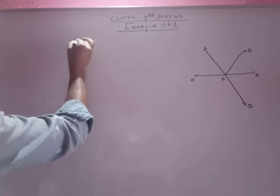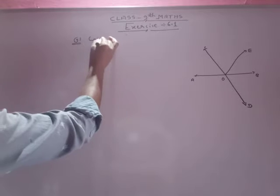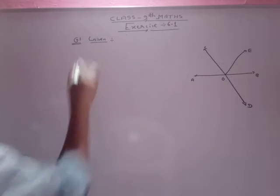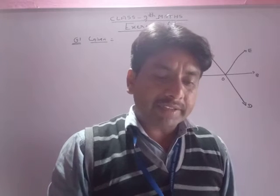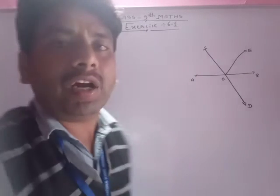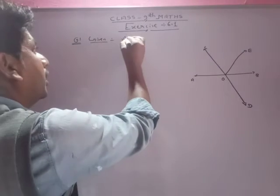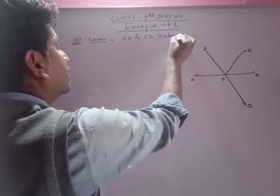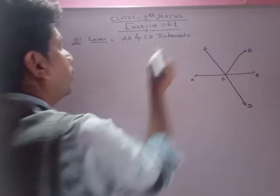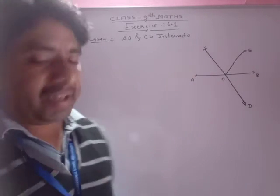First question. First one given, what given? Sir, A, B and C, D intersect at O. Sir, A, B and C, D intersect at O. This intersect at O.